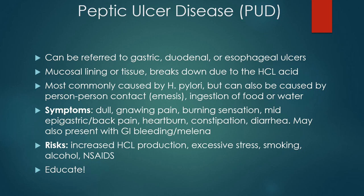Now we're on to peptic ulcer disease, which is also very common and affects about 4.6 million Americans annually, with the peak onset being between the ages of 30 and 60. There are different types of peptic ulcers — gastric, duodenal, or esophageal — and this is really dependent on the location of the ulcer. A peptic ulcer is a hollowed-out area that forms in the mucosa of the stomach and it can extend pretty deeply through all the layers of the stomach to the peritoneum, which separates our stomach from other organs in the abdominal cavity.